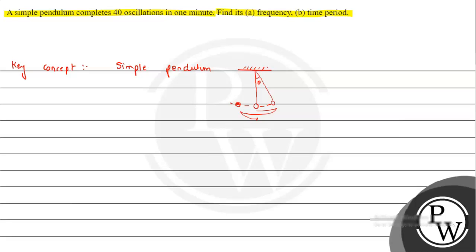When the pendulum returns to its mean position, it is said to complete one oscillation. The time taken for this is the time period. For a simple pendulum, the time period is denoted as 2π√(L/g), where L is the length of the pendulum and g is the acceleration due to gravity.